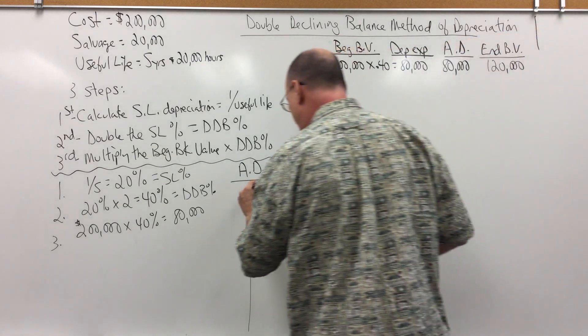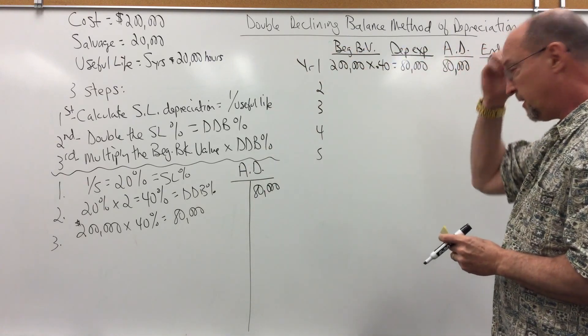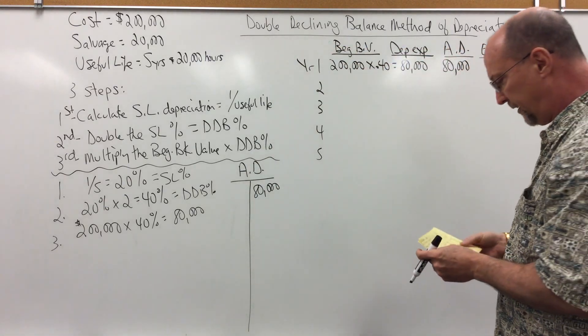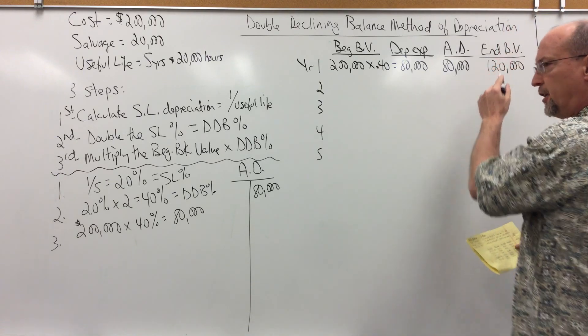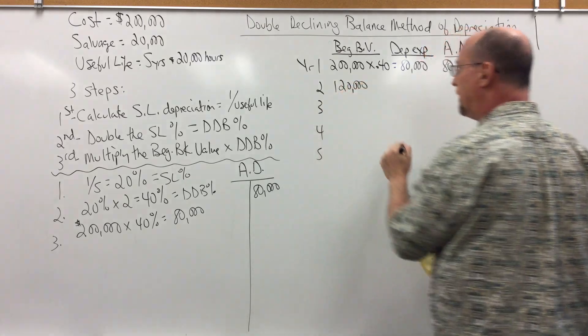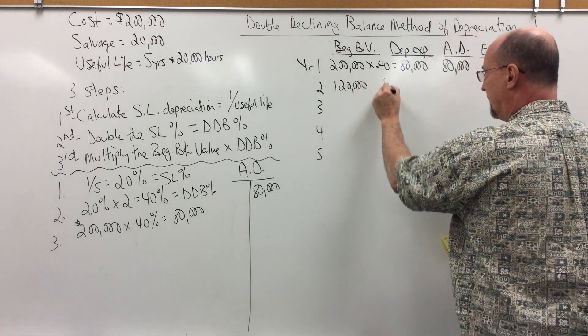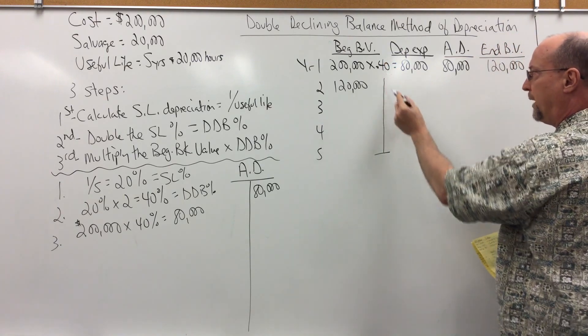Now, I'm also going to put up a T account so we can see how accumulated depreciation accumulates and how it affects book value. The clock strikes midnight, December 31st of year 1 becomes January 1st of year 2. I'm just going to keep multiplying these numbers by 0.4.